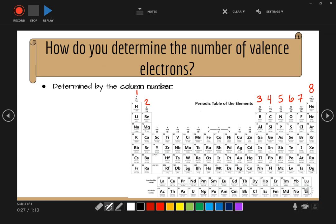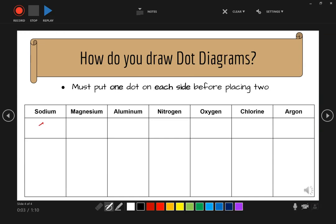So the first thing to do is to determine the number of valence electrons an element has. So if we look for sodium on the periodic table, sodium is over on the left. It's in column one.